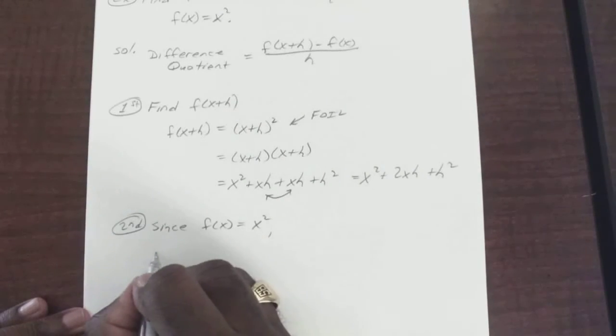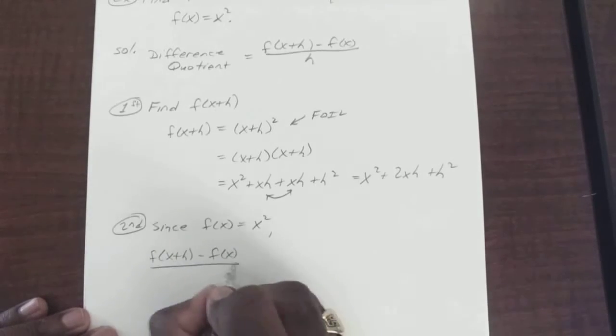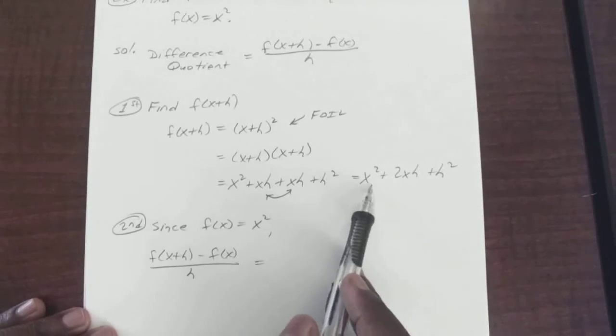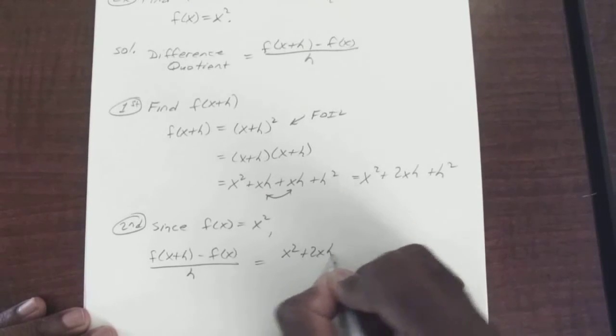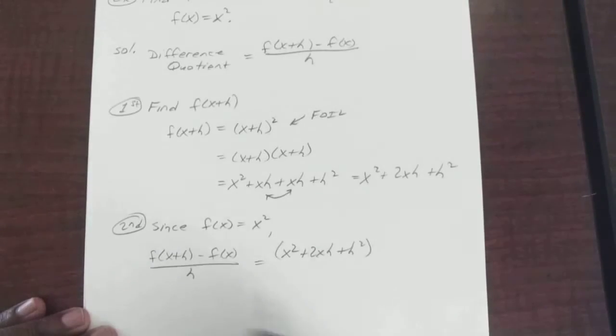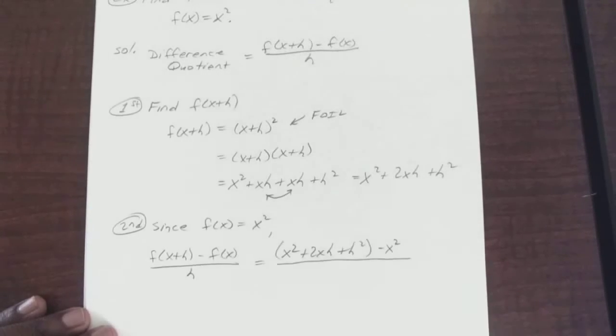our quotient formula, f of x plus h minus f of x over h, would just equal your f of x plus h: x squared plus 2xh plus h squared, minus f of x. So minus x squared all over h.